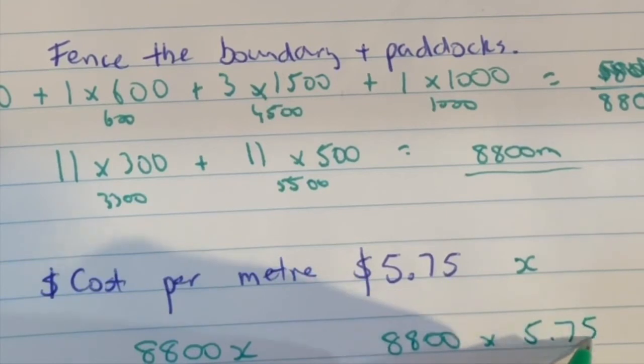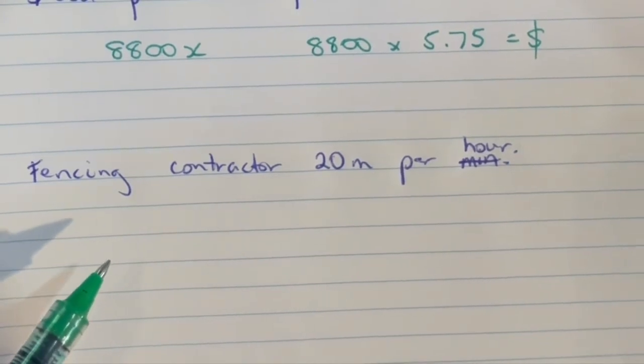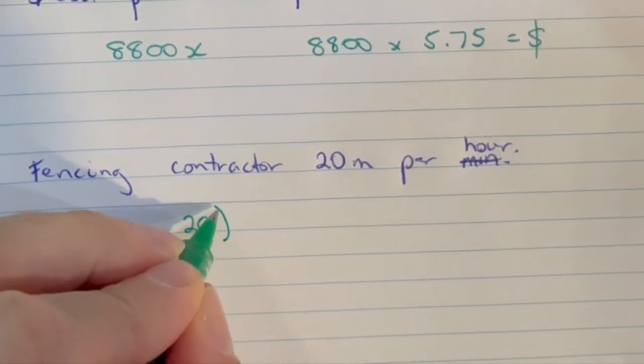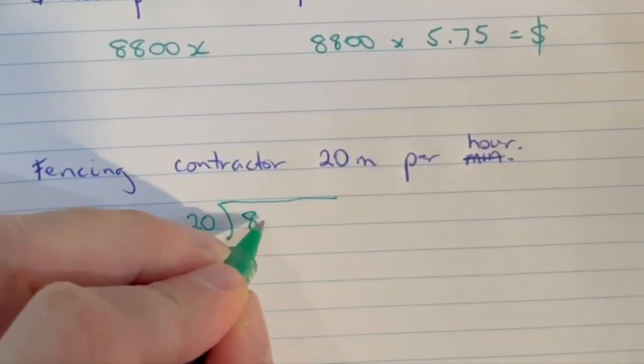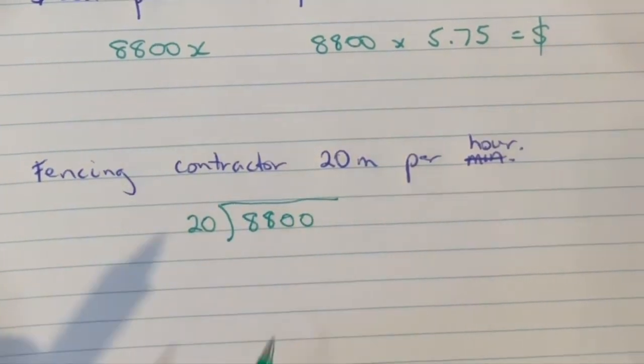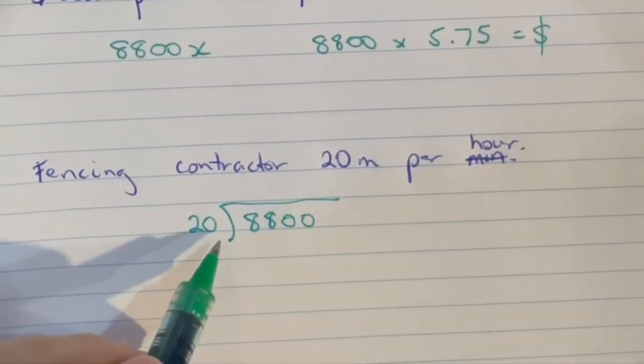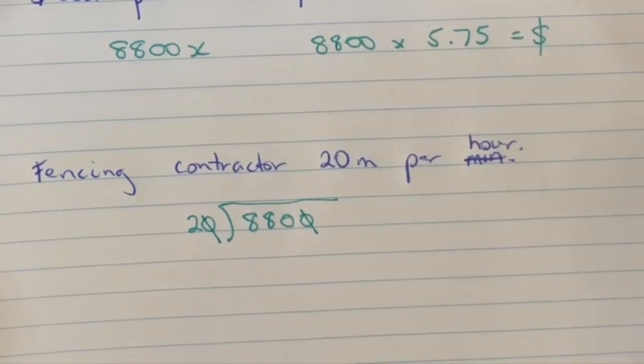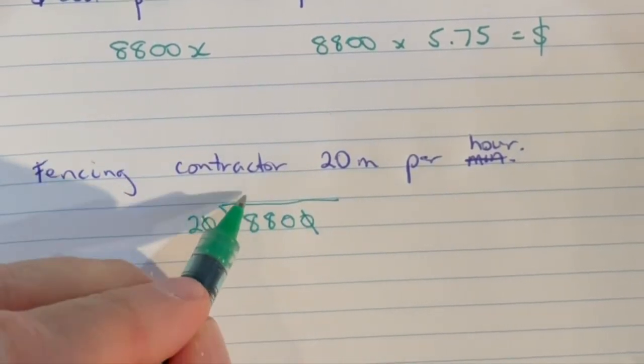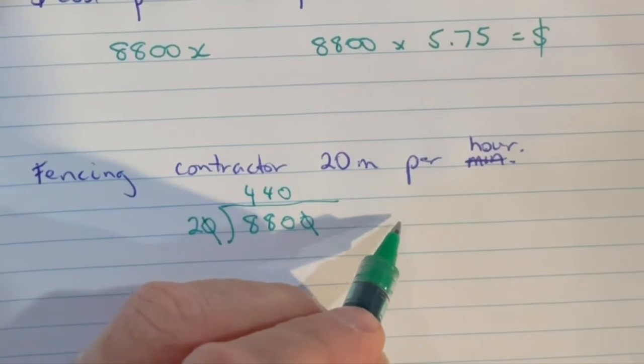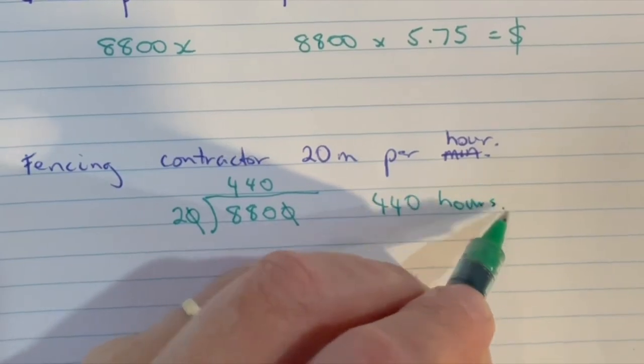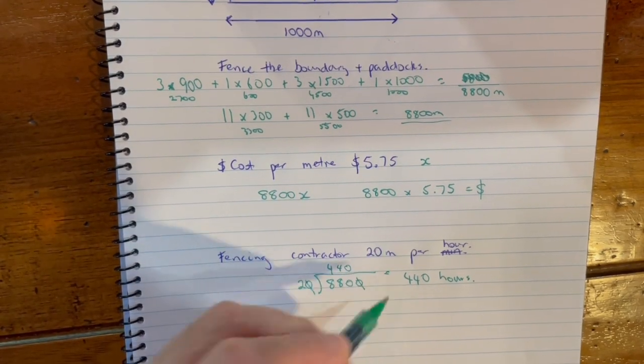Finally, the fencing contractor works at 20 meters per hour, so that'll be 20 meters per hour going into the 8,800. What we know with these division questions is that if we divide by 10, that'll eliminate one of those zeros. And then 2 into 880 is going to give us 440, so it's going to take 440 hours in order to complete that particular task.